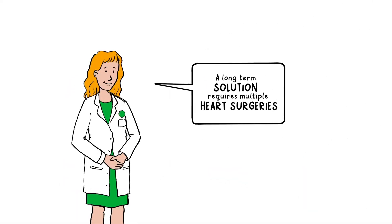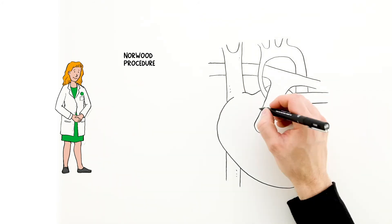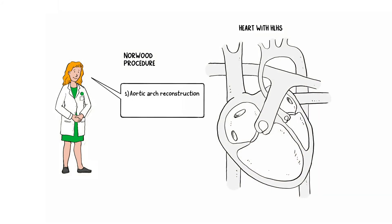But a long-term solution requires multiple heart surgeries. The Norwood procedure is usually performed within the first week of life and includes three elements: an aortic arch reconstruction, which reconstructs the too-small aorta using part of the pulmonary artery.